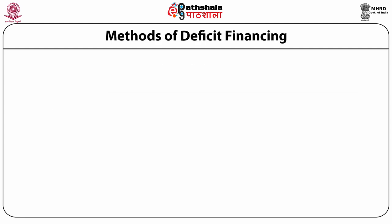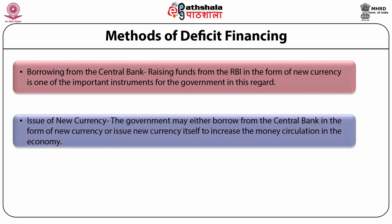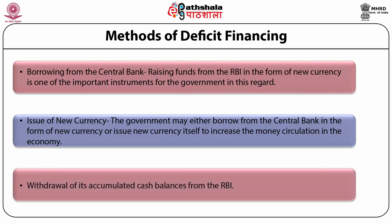Let's discuss the methods of deficit financing. First, borrowing from the central bank — raising funds from the RBI in the form of new currency is one of the important instruments for the government. Second, issue of new currency — the government may either borrow from the central bank in the form of new currency or issue new currency itself to increase money circulation in the economy. Third is withdrawal of its accumulated cash balances from the RBI.